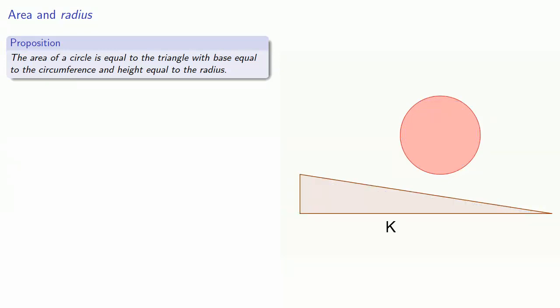Similarly, if the area of the circle is less than K, we can use a circumscribed polygon to arrive at a contradiction. Since the area can be neither greater nor lesser, it must be equal.